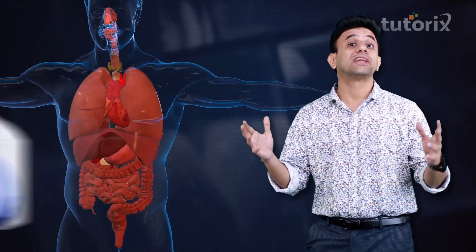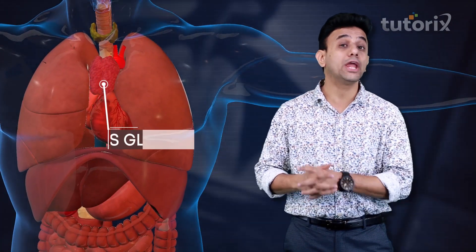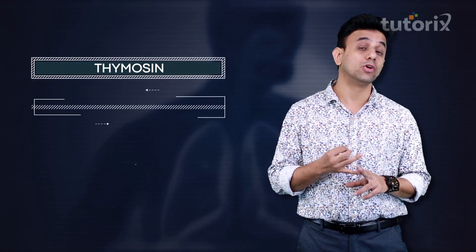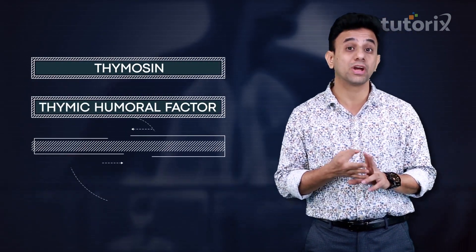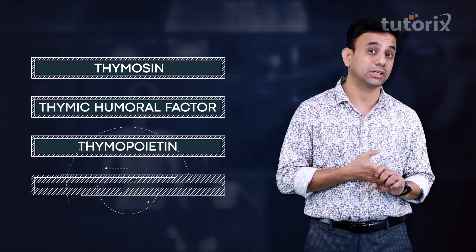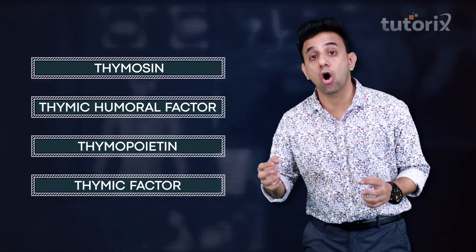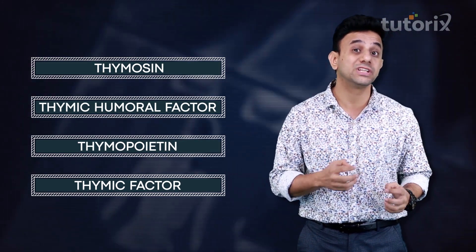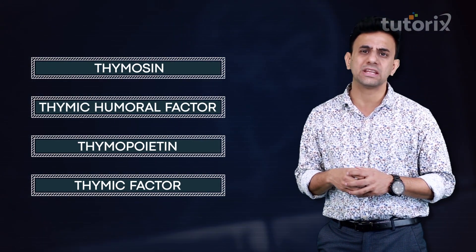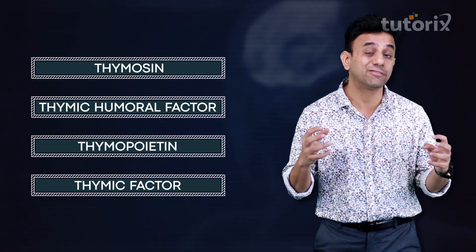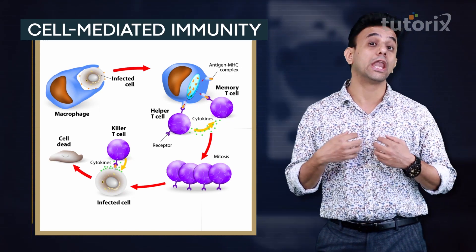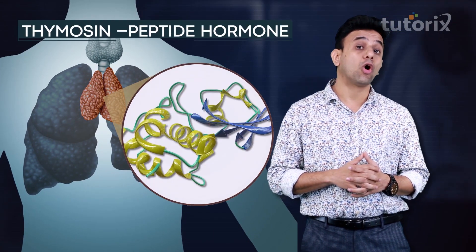The thymus gland produces many hormones: thymosin, thymic humoral factor, thymopoietin, and thymic factor. All these hormones play a very important role in the maturation of T lymphocytes and hence play a very important role in the development of cell-mediated immunity in our body.